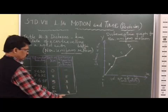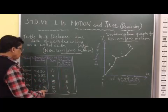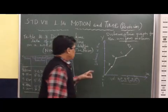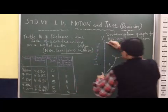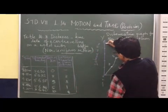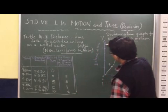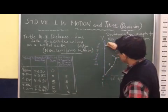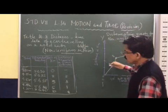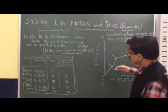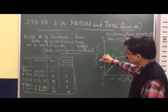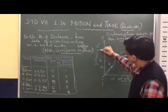The distance covered is also not uniform, so we have to make a graph. We will draw the x-axis and y-axis. On the y-axis, distance in kilometers is written — 2 km, 5 km, 6 km, and so on.